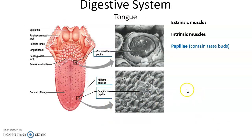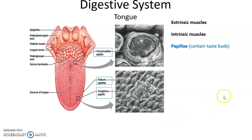The tongue is very important for manipulating and moving food around. There are lots of extrinsic muscles connected to the tongue to help move it, and lots of intrinsic muscles within the tongue to help it move. We also have all those bumps — the papillae on the surface of the tongue. Some provide friction to help the tongue manipulate food, and some are taste buds to help us taste the food we eat.